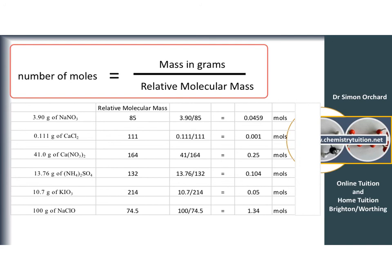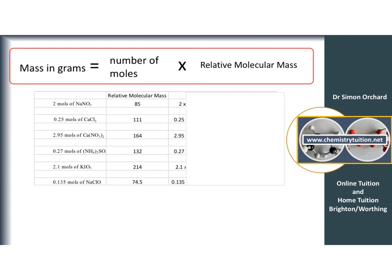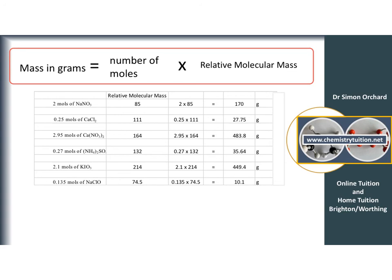Those equations you do need to know — you'll use them a lot at A level. You can also rearrange to find mass in grams: mass = moles × relative molecular mass. Using the same relative molecular masses as before, you multiply the number of moles by the relative molecular mass — rather than dividing — to get the answers in grams.